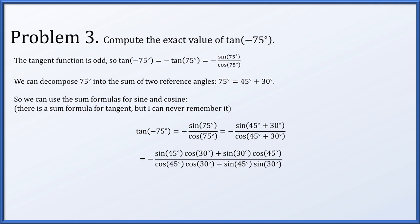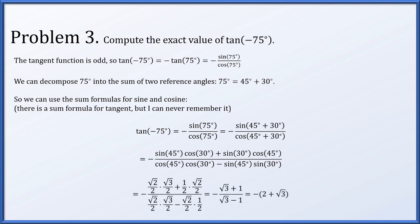In the denominator, we'll use the sum formula for cosine, so cosine of 45 degrees plus 30 degrees becomes cosine of 45 degrees cosine of 30 degrees minus sine of 45 degrees sine of 30 degrees. All of these are known values, so if we plug them in and work through all the algebra, this simplifies to simply negative the quantity 2 plus root 3.